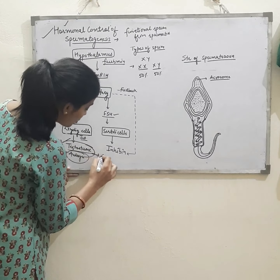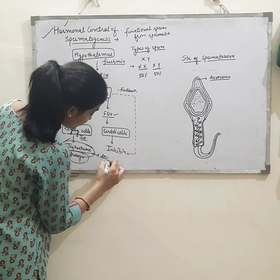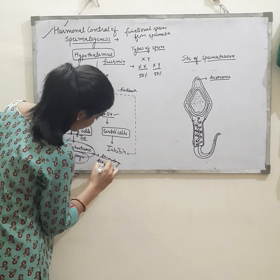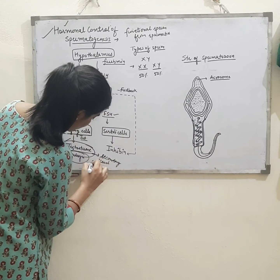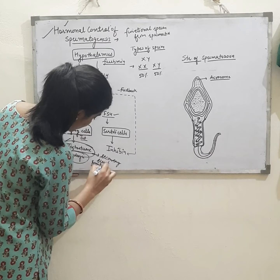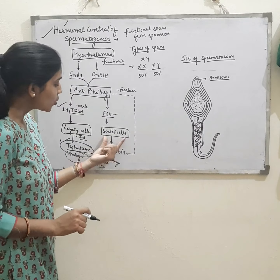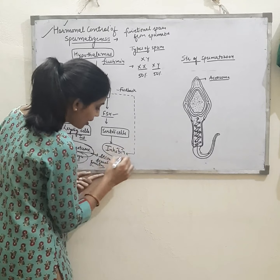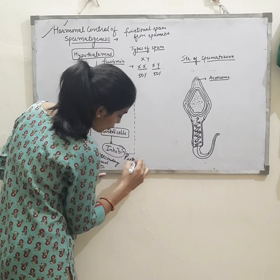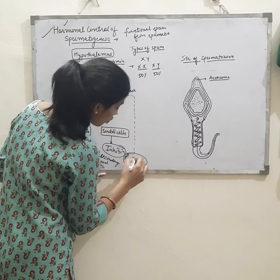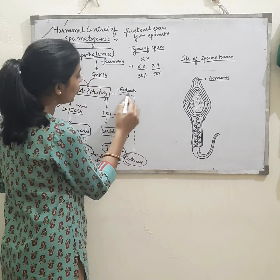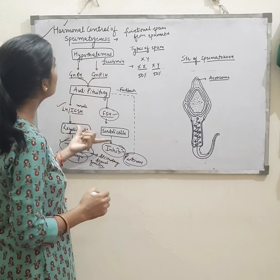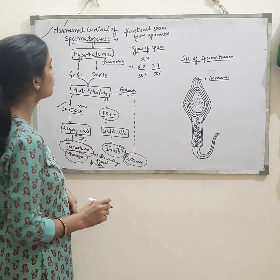Testosterone helps in secondary sexual character formation. The Sertoli cells secrete inhibin, which is a proteinous hormone, and this proteinous hormone makes a negative feedback effect on FSH.